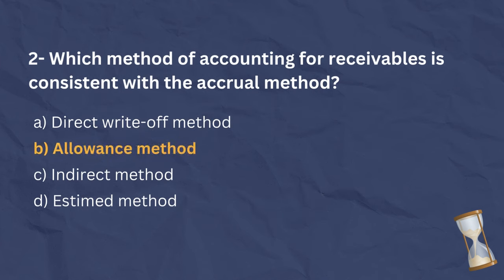The correct answer is B. The allowance method of accounting for receivables is consistent with the accrual method. It involves estimating the credit loss allowance and recognizing credit loss expenses for the period. This method ensures revenue recognition and related expenses are matched in the same accounting period.